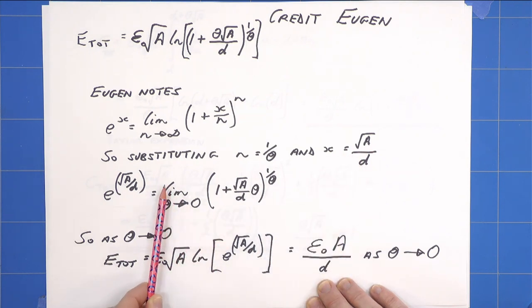So now he has this limit here, where it's theta going to zero, and he observes that that equals e to the root A over D.